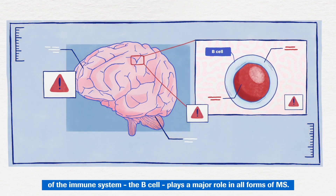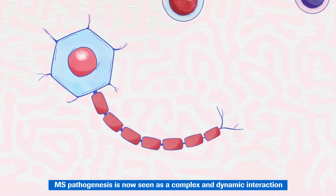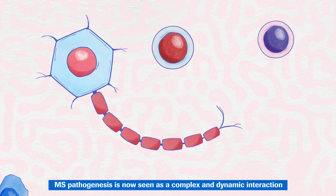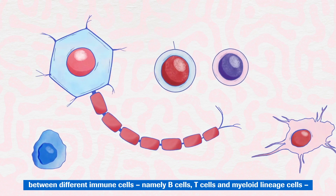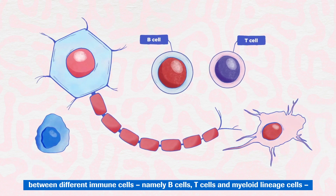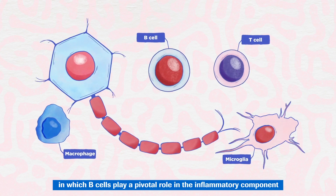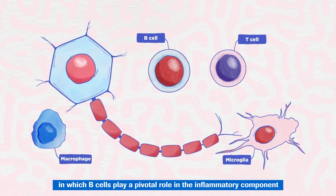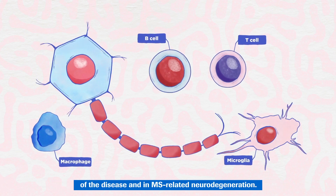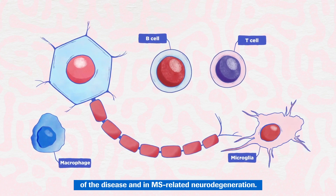MS pathogenesis is now seen as a complex and dynamic interaction between different immune cells, namely B-cells, T-cells and myeloid lineage cells, in which B-cells play a pivotal role in the inflammatory component of the disease and in MS-related neurodegeneration.